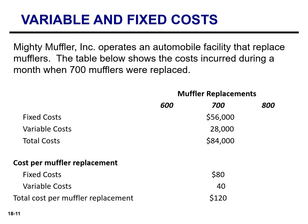When Mighty Muffler is replacing 600 mufflers, fixed costs remain constant at $56,000. Variable costs at this activity level are 600 multiplied by $40 per unit, arriving at $24,000. Total cost when replacing 600 mufflers is $80,000. Fixed cost per unit is $56,000 divided by 600, which equals $93.33. Variable cost per unit remains the same at $40.